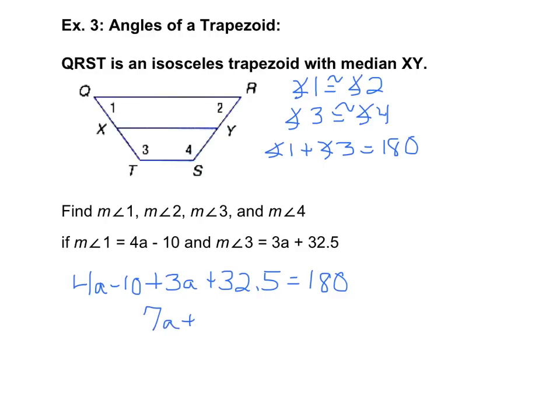Combining like terms, I get 7a and 22.5. Subtracting, and then finally dividing, I get a is 22.5.